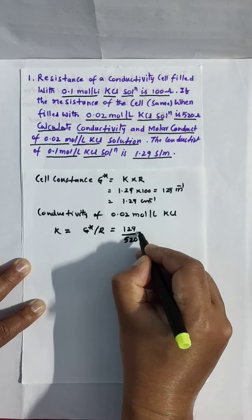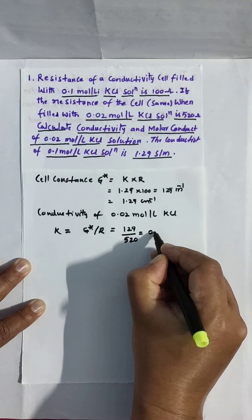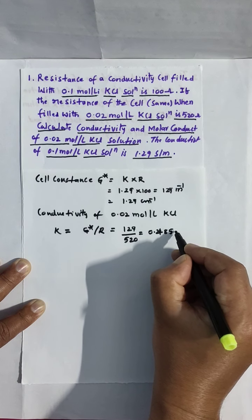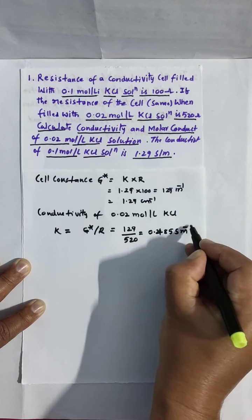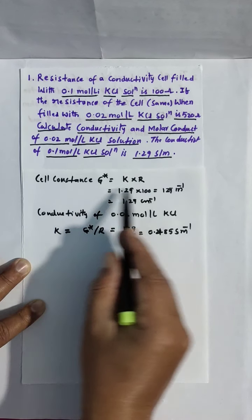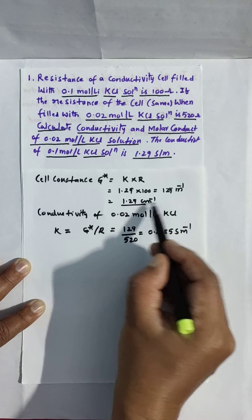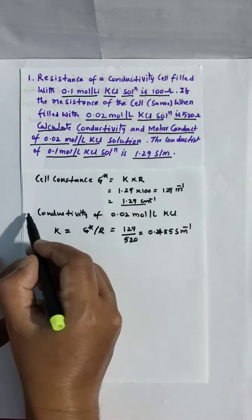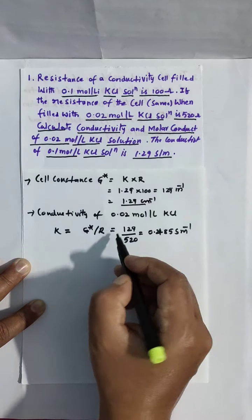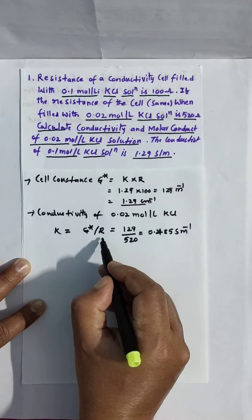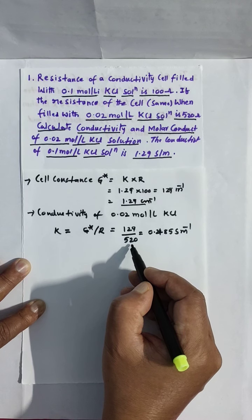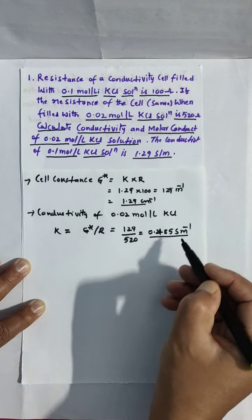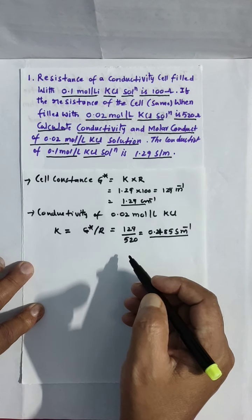Conductivity K equals G star upon R. That is equal to 129 upon 520. That is equal to 0.248 Siemen meter inverse. So cell constant we calculated first as 129, and from that we calculate conductivity K = G star / R, getting 0.2485 Siemen meter inverse.